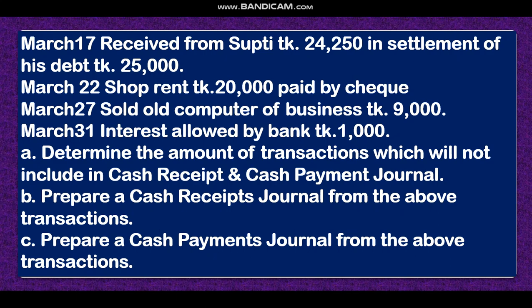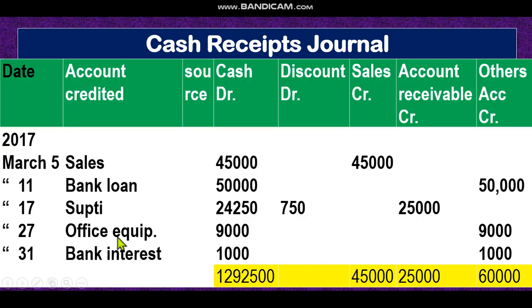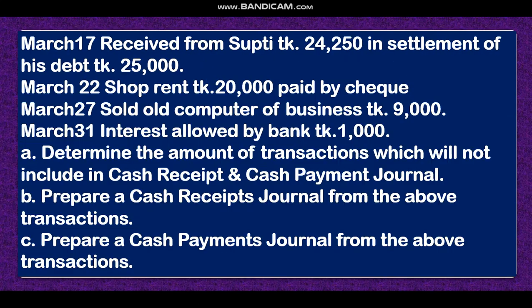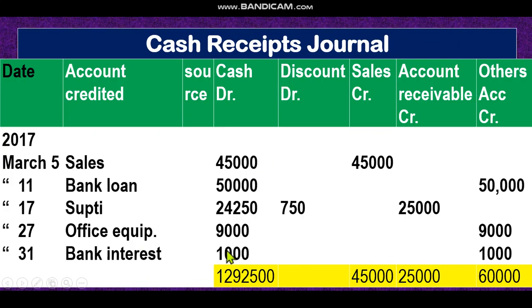Sold old computer of the business — when you sell the computer you receive money. Computer is office equipment, so account name is office equipment — 9,000 in cash and in others account, because it is not sales. Sales means selling goods, not other assets. Interest allowed by bank — we receive interest so our cash increases: bank interest account, 1,000 in cash column and 1,000 in others column. Total cash column: 1,29,250; discount column: 750; sales: 45,000; accounts receivable: 25,000; others: 60,000.